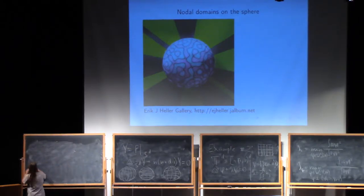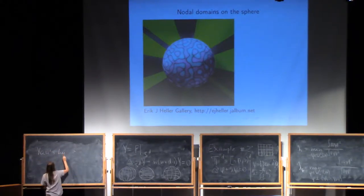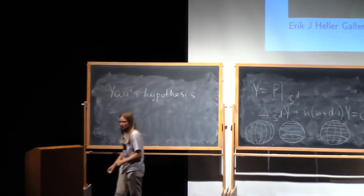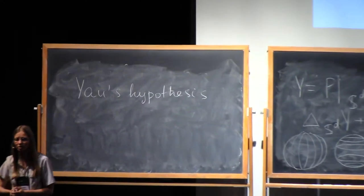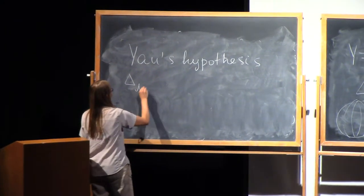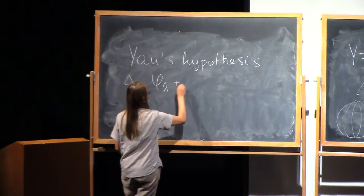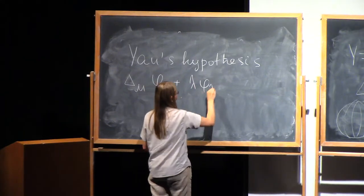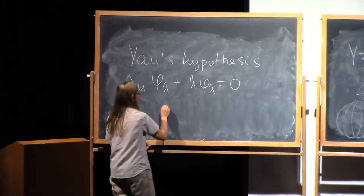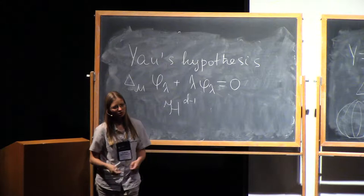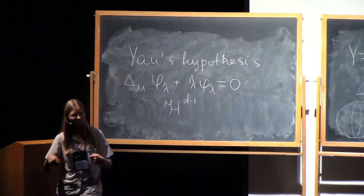It's called Yau's hypothesis. That tells you that if you take an eigenfunction on a manifold and you look at the zero set, in dimension D, it's D-1 dimensional.